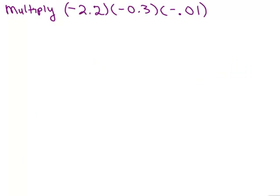Let's try this one. We're multiplying three numbers together. See if you can do this one on your own first. Is my answer going to be positive or negative? I have a negative times a negative times a negative, so what's that going to give me? It's going to give me a negative.